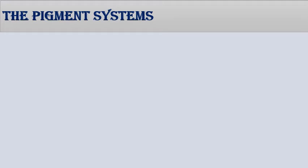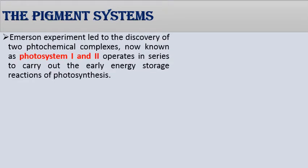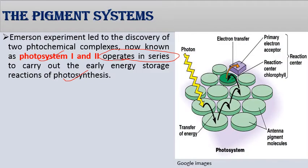Each photosystem consists of a reaction center (core complex) and antenna molecules (light harvesting complex). The antenna pigments absorb light and transfer the energy to the reaction center, which then transfers electrons to various electron carriers. The light harvesting complex captures light energy and transfers it to the reaction center. Photosystems are specially separated in the thylakoid membranes.